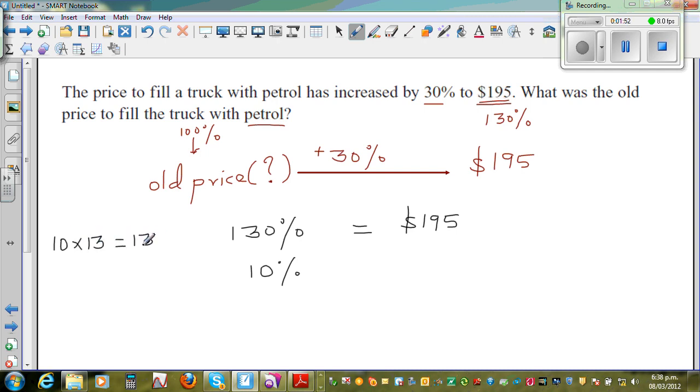So there are 13 lots of 10 in 130. So 10% would be 195 divided by 13.